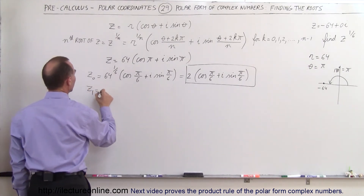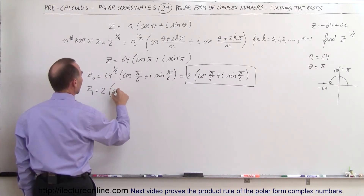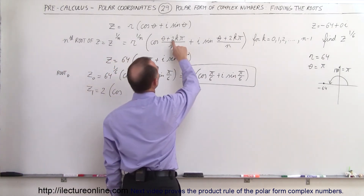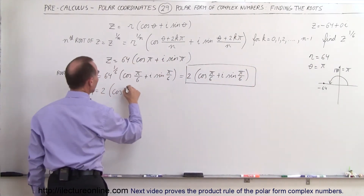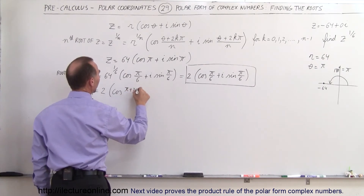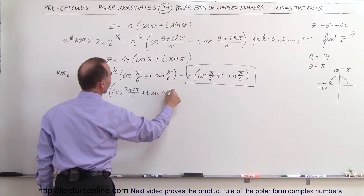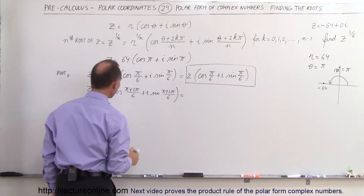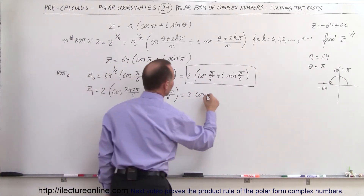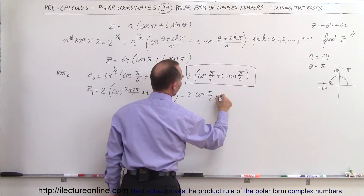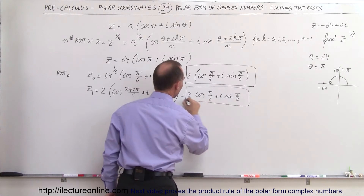For z sub 1, we let k equal 1, so we add 2 pi. That gives us 2 times the cosine of pi plus 2 pi divided by 6, plus i times the sine of pi plus 2 pi divided by 6. That simplifies to 3 pi over 6, which is pi over 2. So z sub 1 equals 2 times the cosine of pi over 2, plus i times the sine of pi over 2.